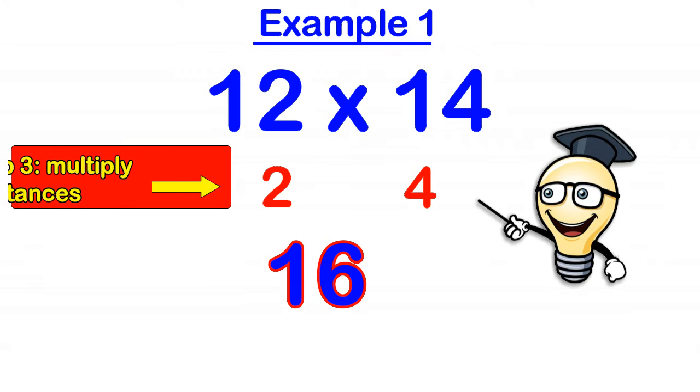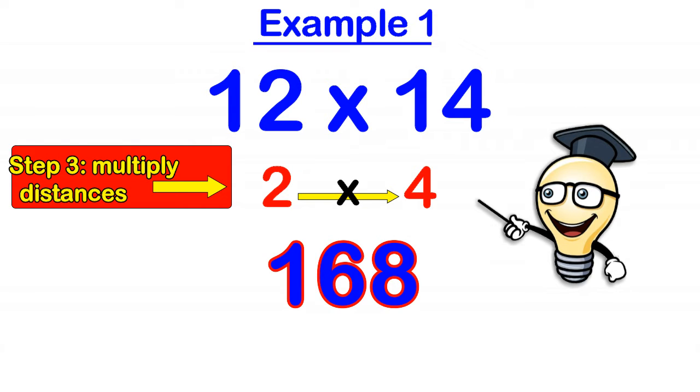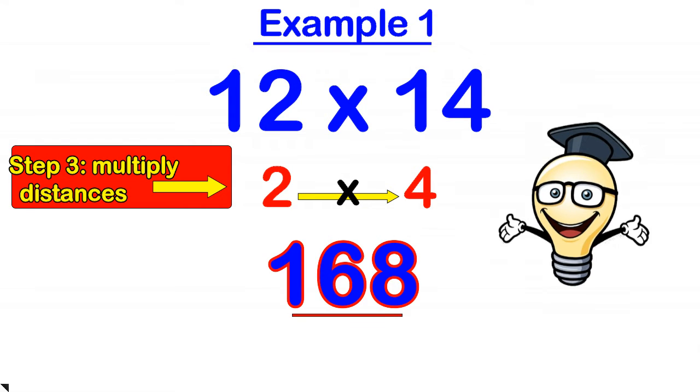And then what we do, step 3, is we multiply these distances away from 10. So these numbers at the bottom, 2 times 4 is 8. So the answer is 168. And it's that simple.